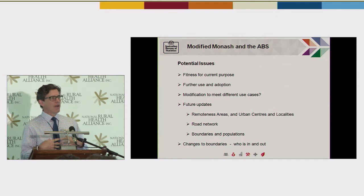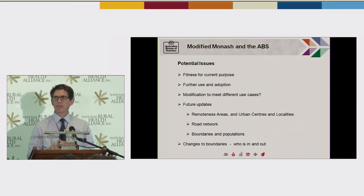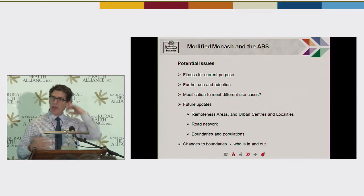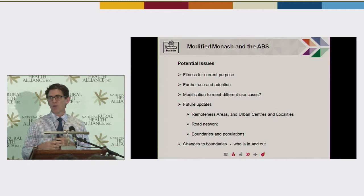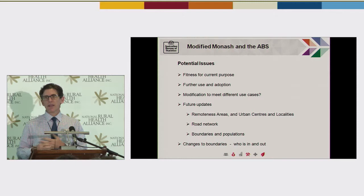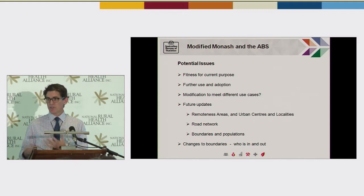Up to this point, and certainly for 2016, we've been producing updates of remoteness areas and urban centres and localities every five years in line with new information from the census. With each update of remoteness areas, the boundaries do change — there's some limitation on that change, but they do shift over time. That shift in boundaries will have a direct impact on the Monash Model; it will change the nature of the model and the lines on the ground, meaning one person who was in an area previously may move to another area, with direct impacts on the services associated with that geography.